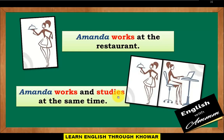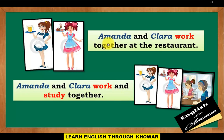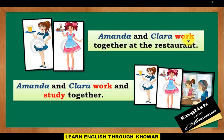'Amanda and Clara work together at the restaurant.' This is a simple sentence with a compound subject, meaning it contains two subjects. The verb is 'work,' and the two subjects together are 'Amanda' and 'Clara.'